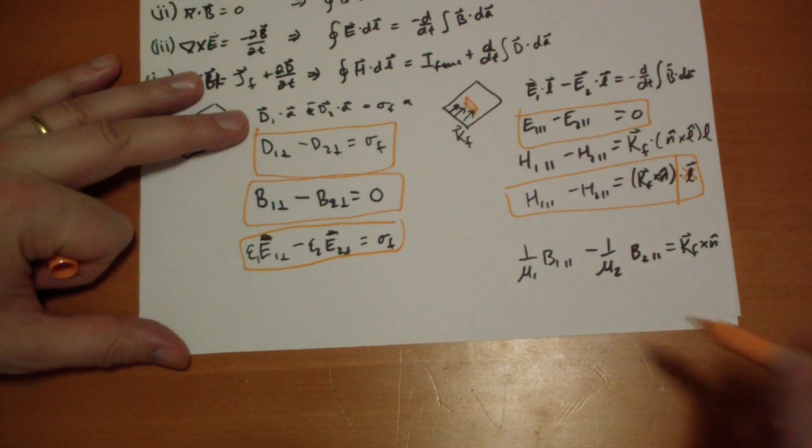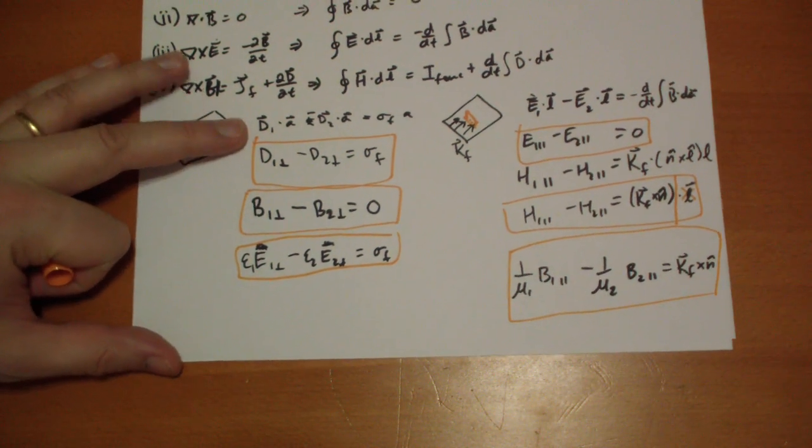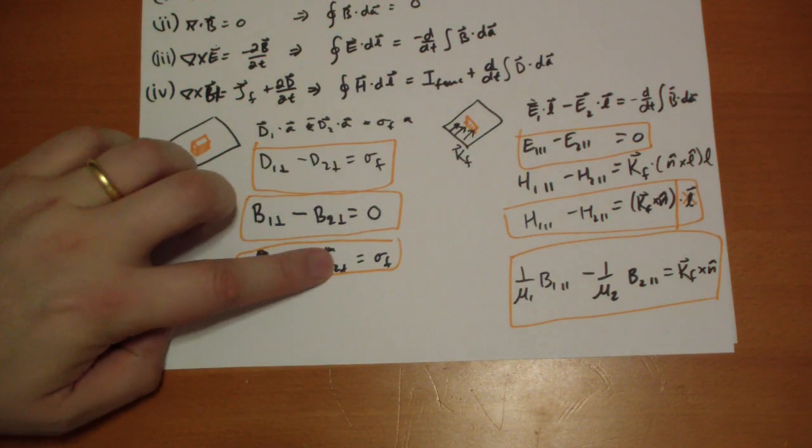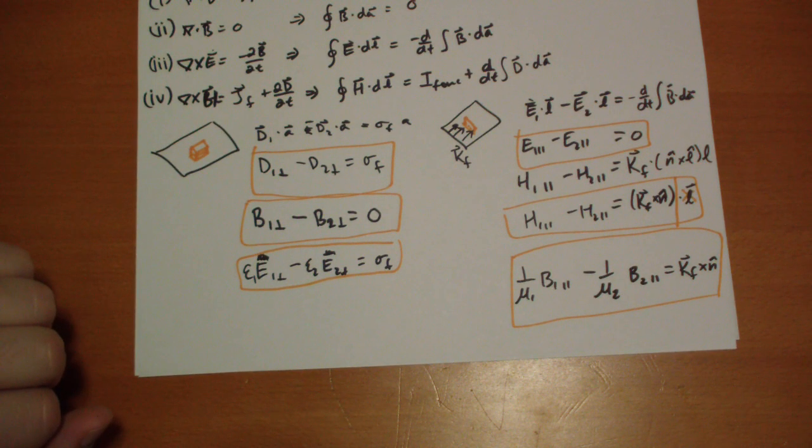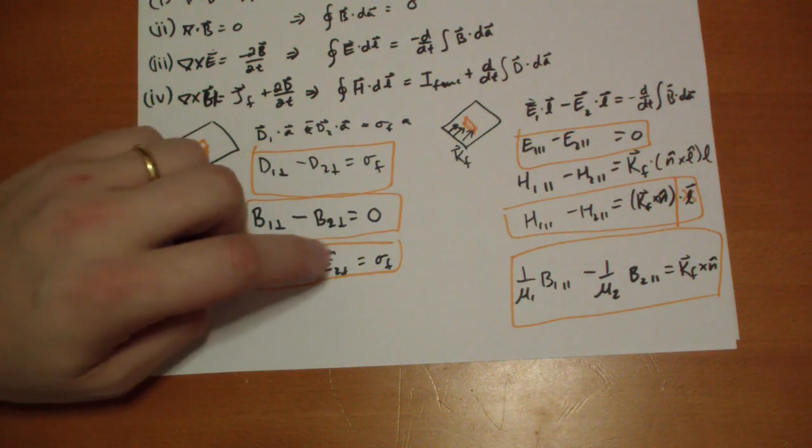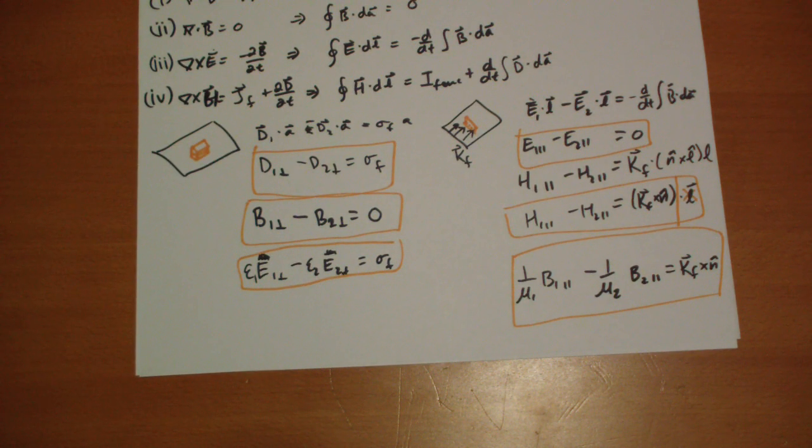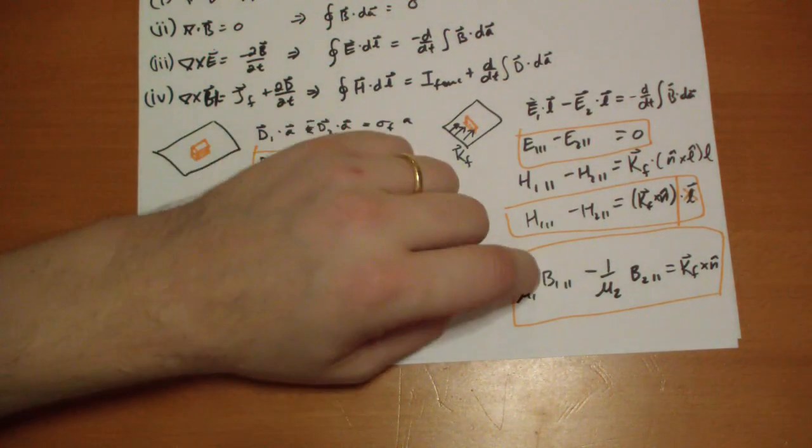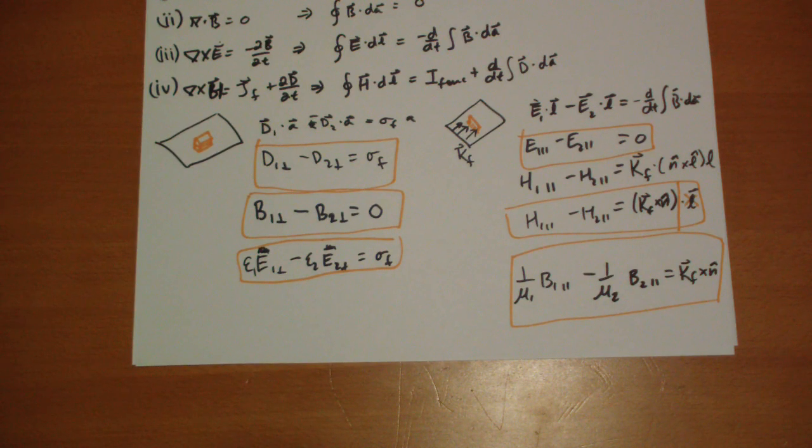That's how it works with linear media. When you're going between different materials, you can use these equations to see how the E and B vectors have to change. If we don't have any free charge, then the D vectors don't change as you cross the material, and in linear media the electric fields won't change. If you don't have any surface current, then the H vectors won't change, and in linear media the B vector won't change. That's a nice continuity result.